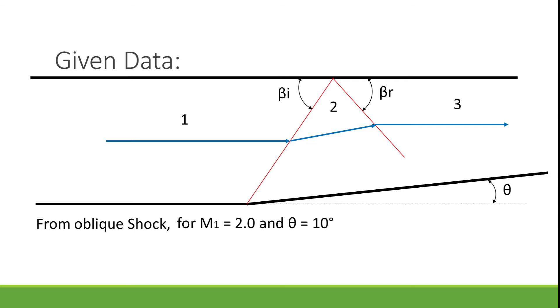Now let's proceed using gas tables. Refer the gas table for oblique shock wave for the Mach number value 2 and theta value 10 degrees. From there you can find the corresponding value of shock wave angle beta, which is coming around 39.31 degrees.